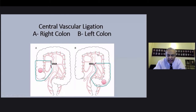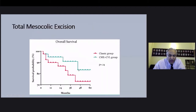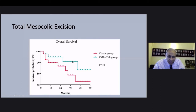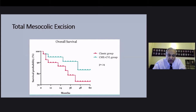By doing this, the entire mesocolic package is kept intact, allowing the pathologist to evaluate all the fat and lymph nodes contained within that drainage package. The important data emerging is that five-year survival is significantly different if you perform complete mesocolic excision with central vascular ligation versus the classic approach of ligating the vessel halfway up. This is an important statistic to consider when offering patients the prospect of cure in colon cancer.